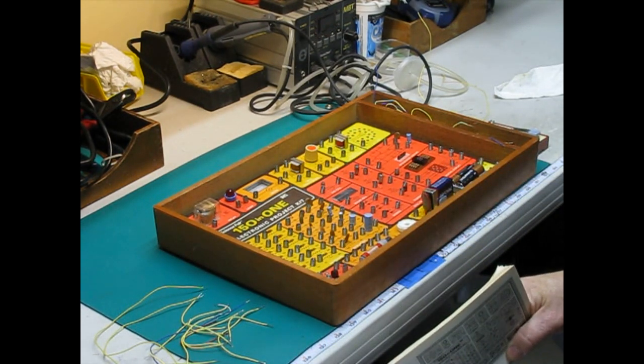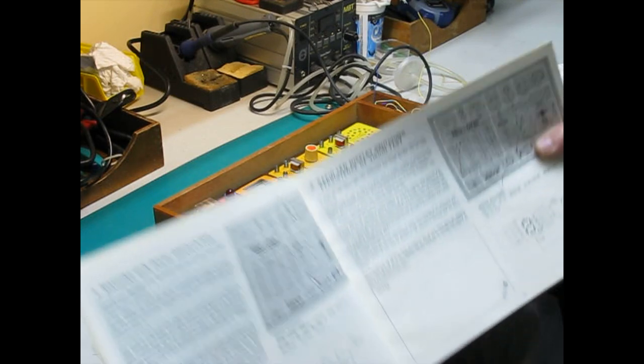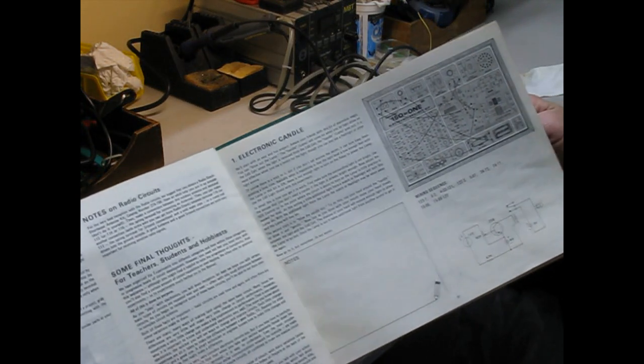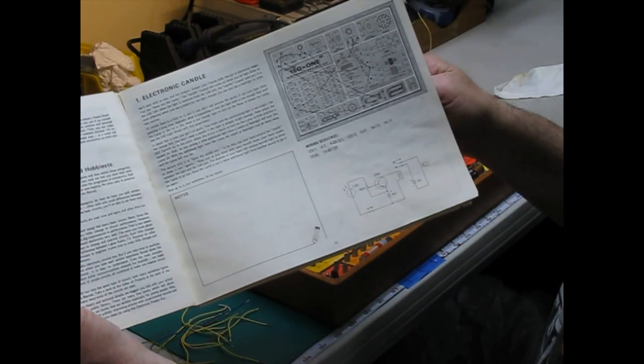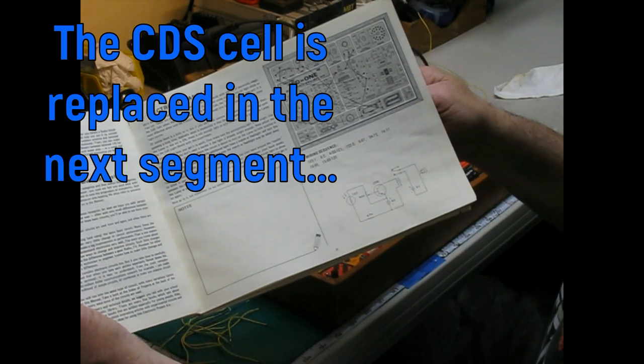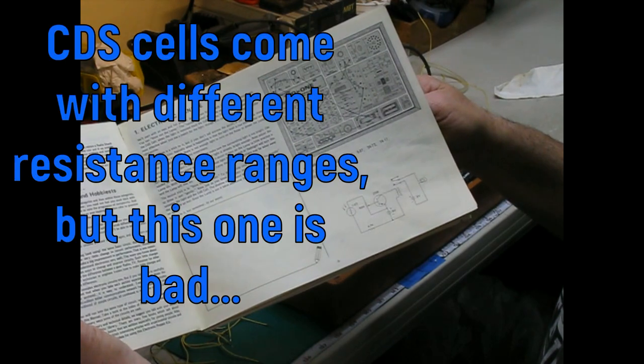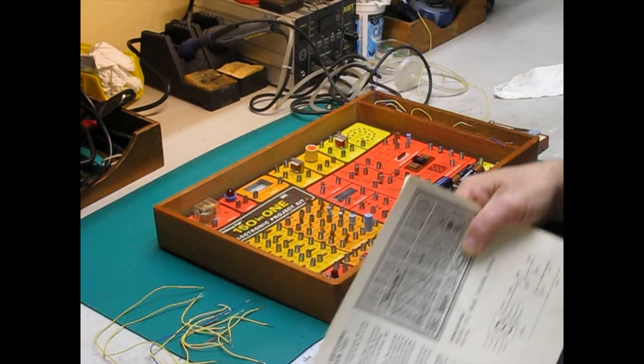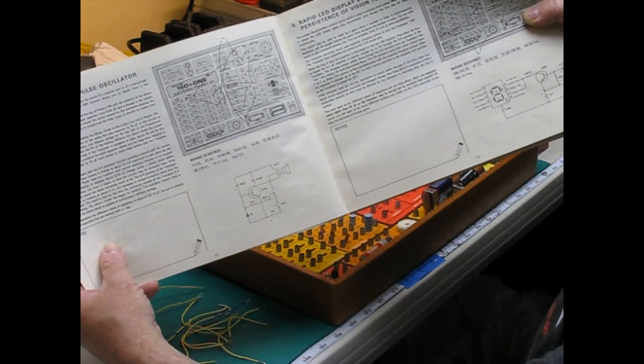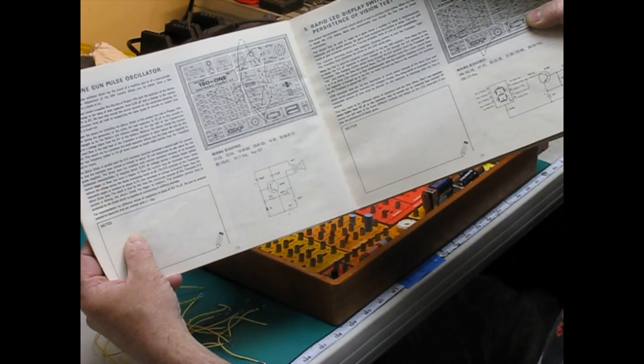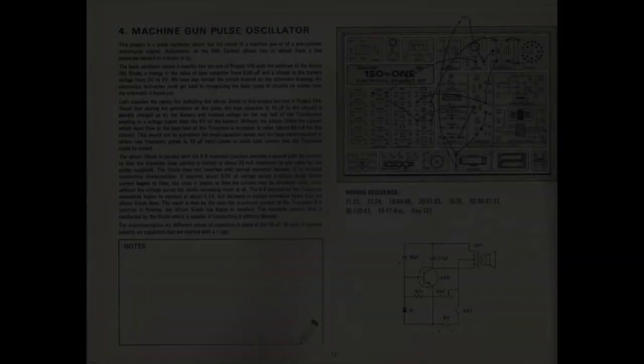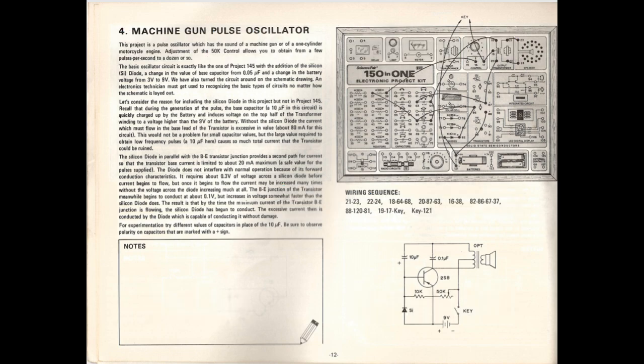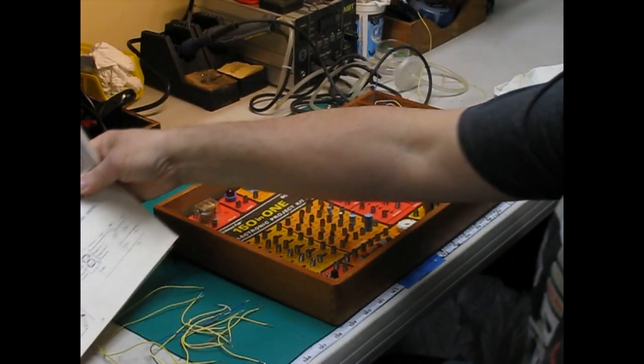I thought since we went ahead and got this thing cleaned up, we should go ahead and build a circuit and see how it actually worked back in the day. I originally tried to do number one here, which is the electronic candle, but I found out that the CDS cell on this is woefully out of range. The CDS cells would normally be about 10K in the light and a few hundred K in the dark, and this is about 300 ohms in the light and 10K in the dark. So, it wouldn't work. So, then I picked out the machine gun pulse oscillator, which is number four, and I'll put a scan of this and pop it up on the screen.